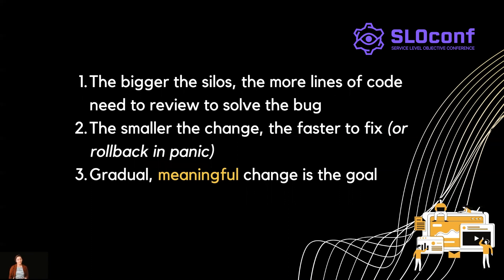We're able to flip to that kind of thinking because of some foundational beliefs from working in DevOps. The first is that the bigger the silos, the more lines of code are needed to review in order to solve a bug. Inversely, the small changes you make in a CI/CD fashion, the faster things are to fix or roll back in a panic. And third, gradual and meaningful change is the goal of working in CI/CD. In DevOps, we know how to make meaningful, gradual change — but SRE is the practice of understanding an organization when we're making changes that are meaningful.